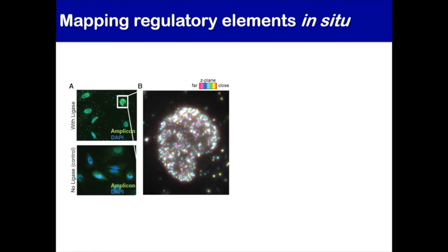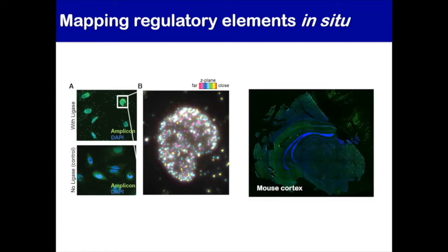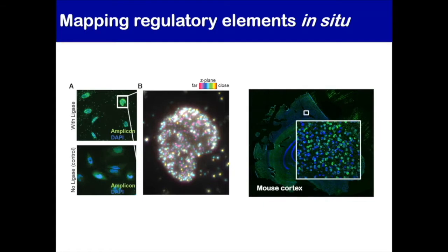Here's one example of what you see when you take an individual cell and perform this prep — with ligase at the top and a no-ligase control below. You see individual nuclei populated with spots, where each individual spot is one amplified regulatory element. Zooming into one cell, you can color points by z-plane to see into the cell and understand the 3D structure of open chromatin. We can also do this directly in tissues — here in mouse cortex, you can zoom in and see individual foci amplifying up.